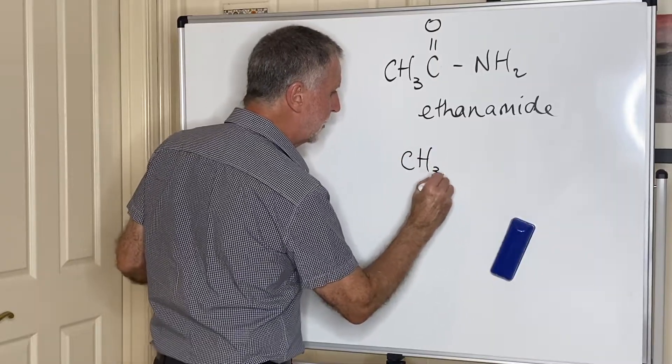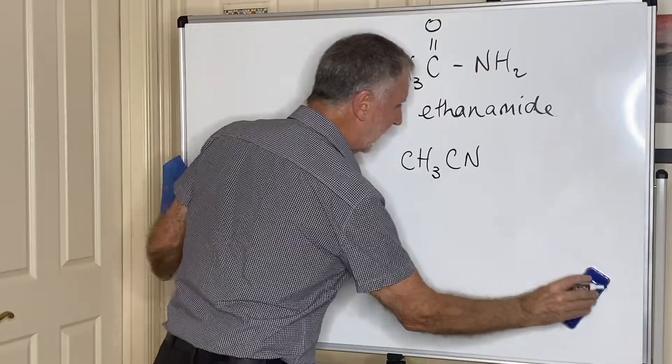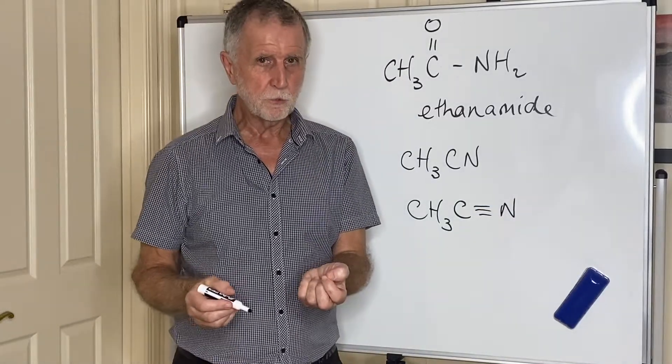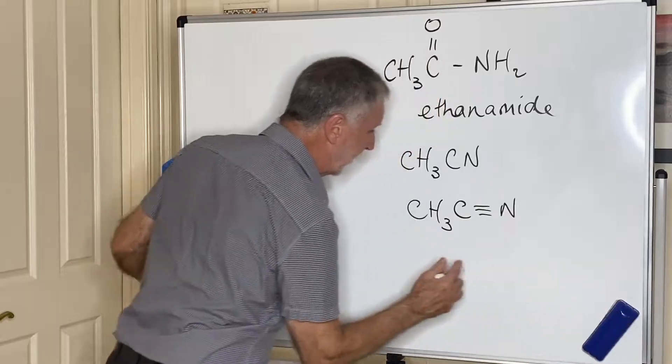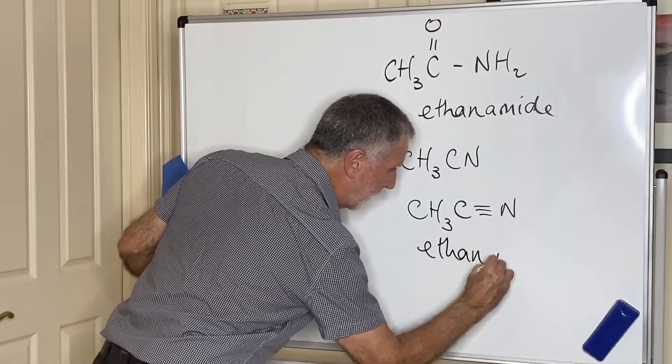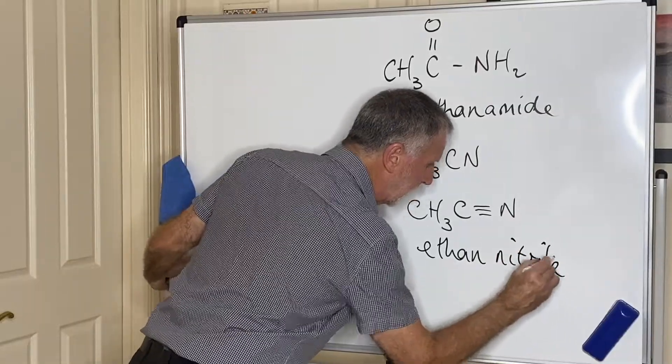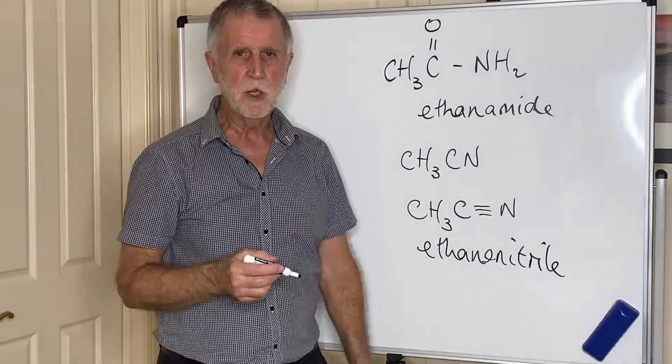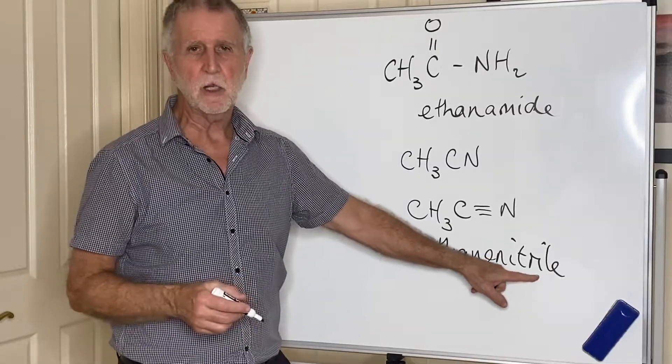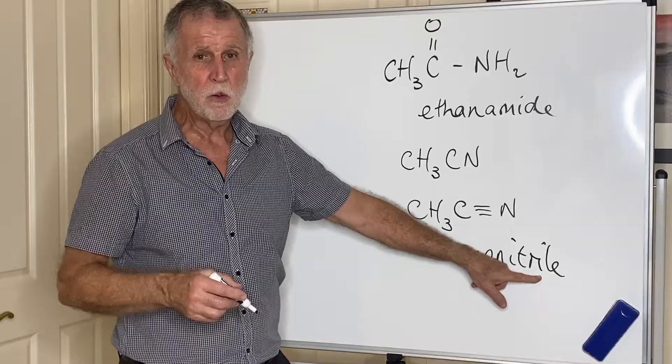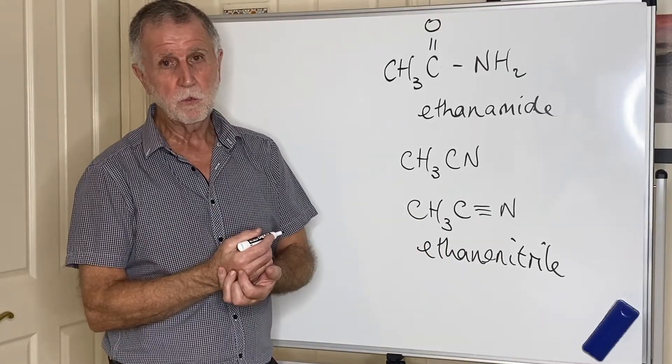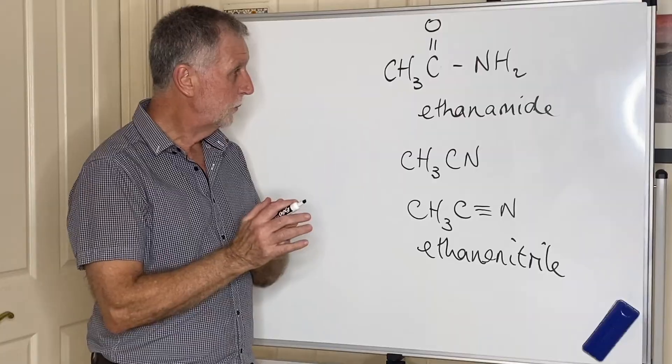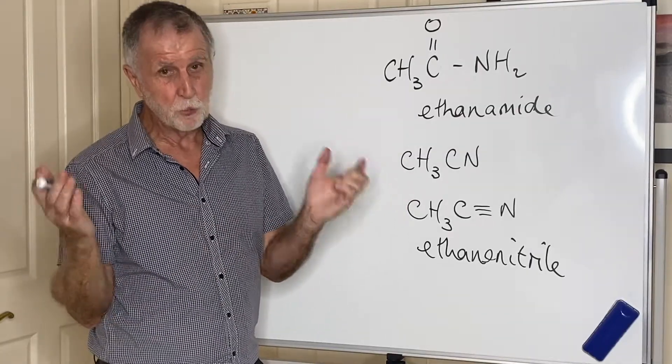The final functional group that you need to know about is this one: CH₃CN, that is CH₃ triple bond N. This is called a nitrile. To name a nitrile is very easy: ethanenitrile. You can see I've left a little bit of gap there, and that's because they usually keep the E in rather than run two Ns together. They call it ethanenitrile.